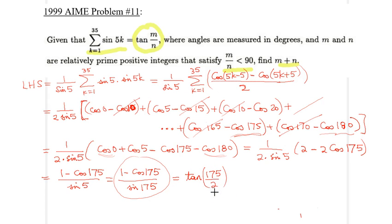And, as a result, the desired answer would be just, and obviously, 175 over 2 is definitely less than 90. So, the answer would be 175 plus 2, which is simply equal to 177. And I'm done.